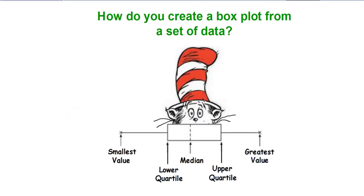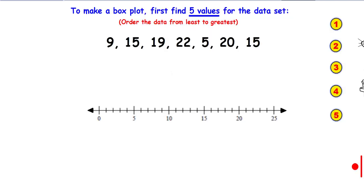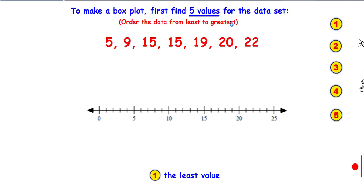Now we're back to how do you create a box plot from a set of data — sometimes called a box and whisker plot; they're the same thing. To make a box plot, you need to find five values for the data set. First, put the numbers in order. The least value is 5 — I'm going to put the whisker on 5. The greatest value is 22 — there's my other whisker.